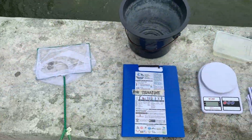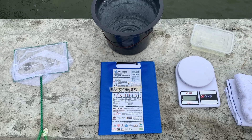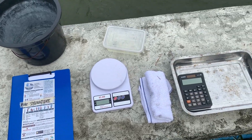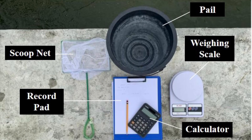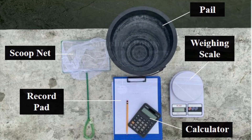Here are the things needed for sampling: weighing scale, scoop net, pail, record pad, and calculator.